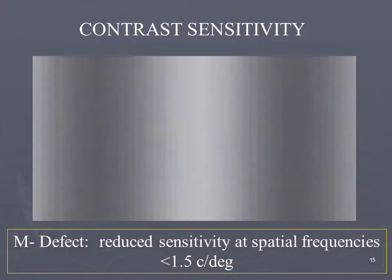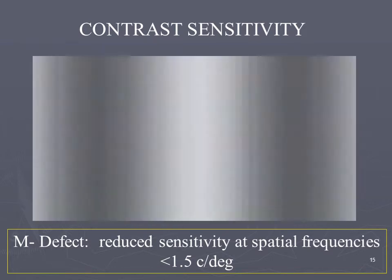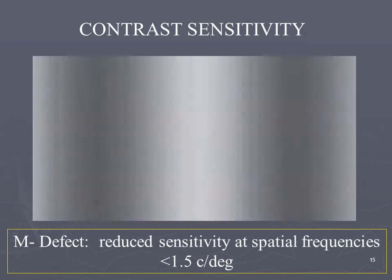Indeed, contrast sensitivity studies have found a magnocellular impairment in a consistent proportion of dyslexics. A class of patients seem to be less sensitive to contrast of gratings of spatial frequencies below 1.5 cycles per degree and temporal frequencies higher than 10 Hz. While the way this impairment affects reading is unclear, such a contrast sensitivity deficit can be regarded as an epiphenomenon — a marker of visual dyslexics.